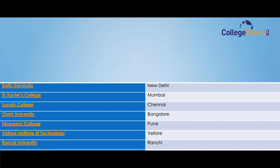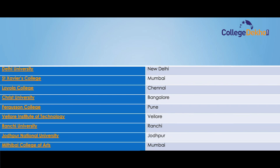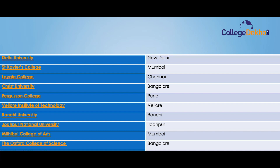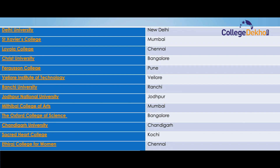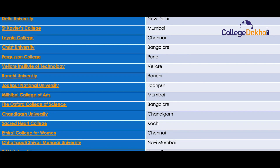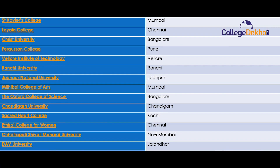Now let's know about the top B.Sc Computer Science colleges in India. These include Delhi University (New Delhi), St. Xavier's College (Mumbai), Loyola College (Chennai), Christ University (Bangalore), Ferguson College (Pune), Vellore Institute of Technology (Vellore), Ranchi University (Ranchi, Jharkhand), Jodhpur National University (Jodhpur), Mithibai College of Arts (Mumbai), The Oxford College of Science (Bangalore), Chandigarh University (Chandigarh), Sacred Heart College (Kochi), Ethiraj College for Women (Chennai), Chhatrapati Shivaji Maharaj University (Navi Mumbai), and D.A.V University (Jalandhar).